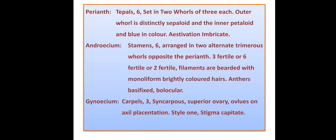Androecium: six stamens are present, arranged in two alternate trimerous whorls opposite the perianth. In the Commelinaceae family there may be three fertile, or six fertile, or only two fertile stamens. The filaments are bearded — they bear moniliform, brightly colored hairs. The anthers are basifixed, and they are bilocular, meaning the anther shows two locules.